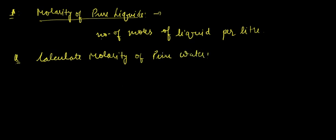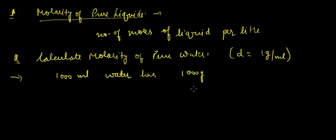Density is one gram per ml, so we can write that thousand ml water has thousand gram. Hence molarity would be thousand upon eighteen, which is 55.55.